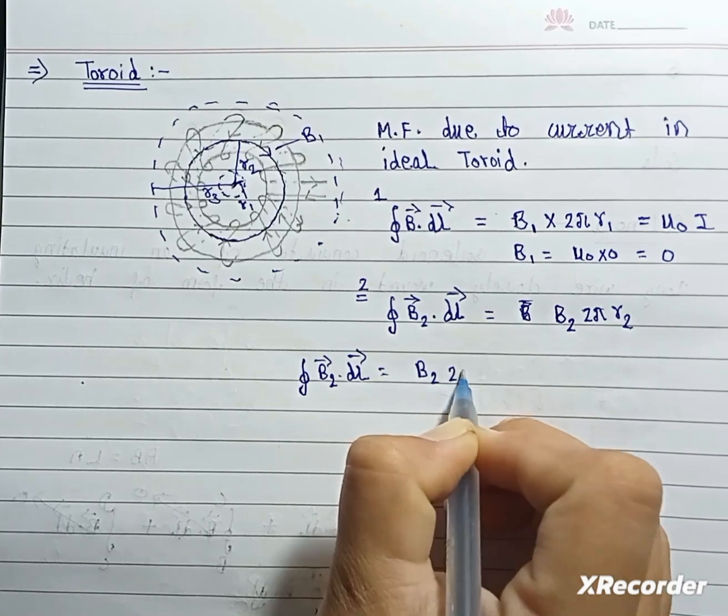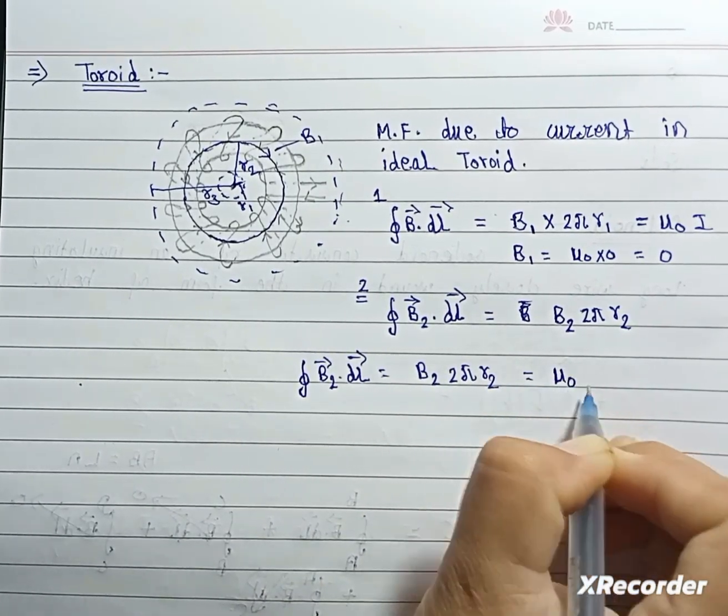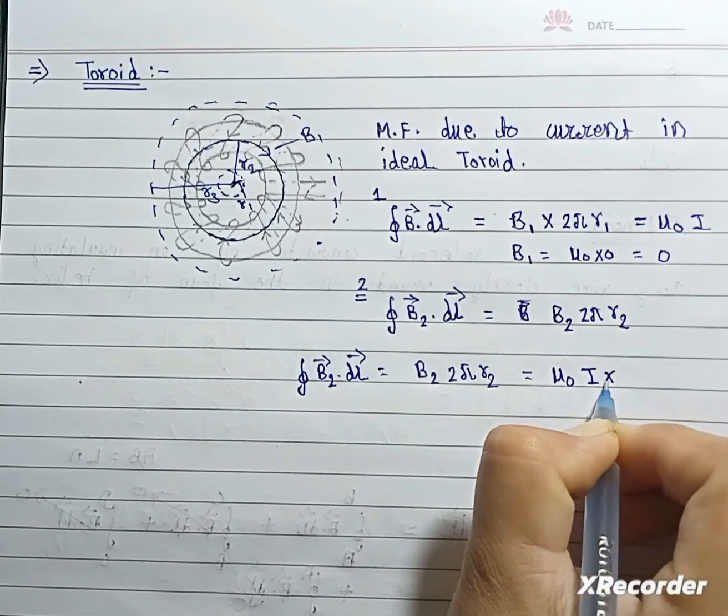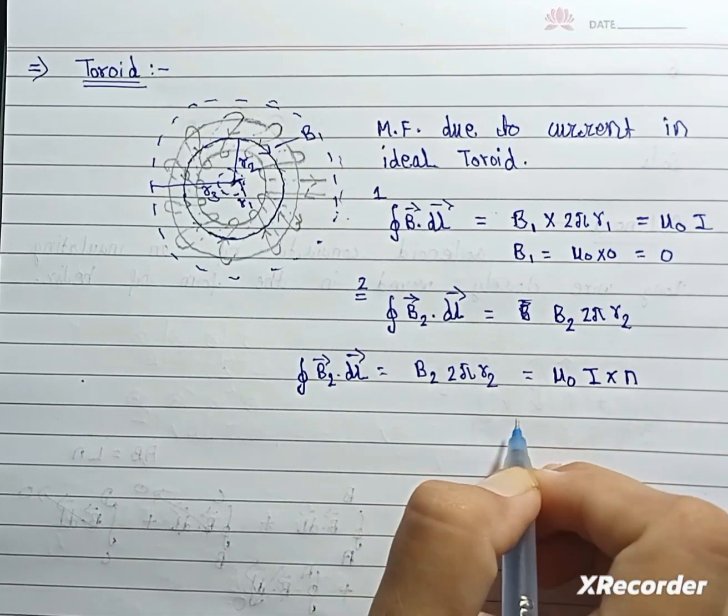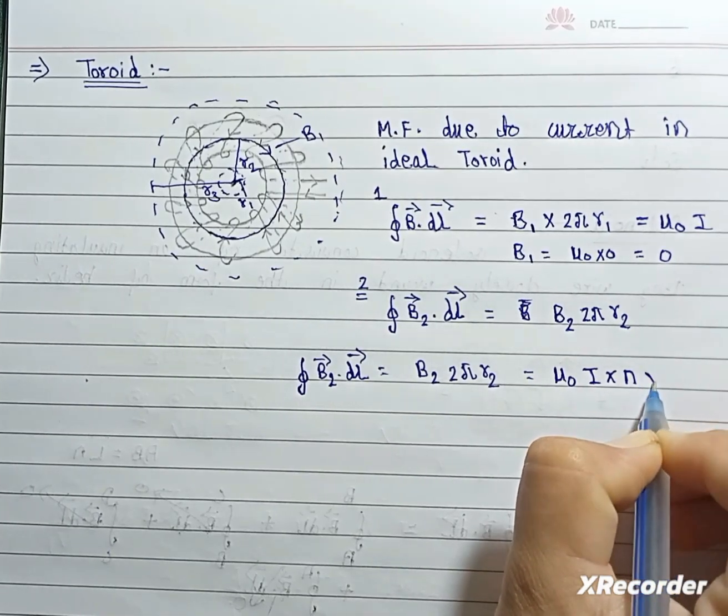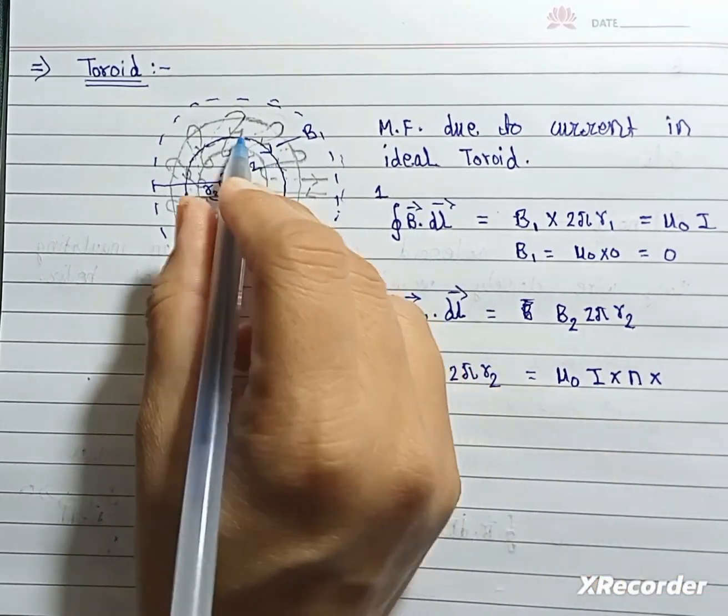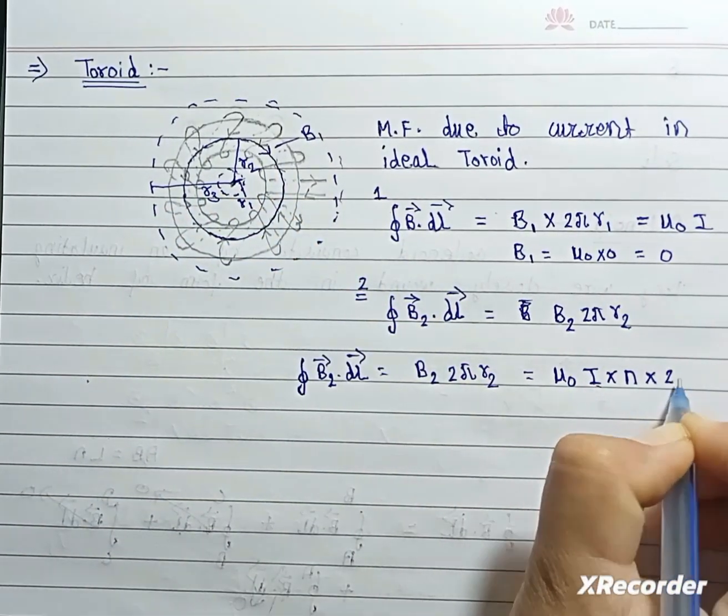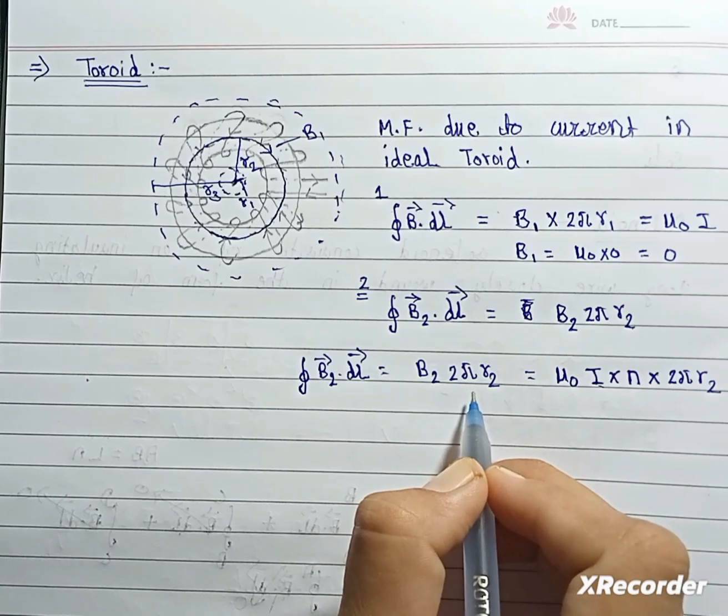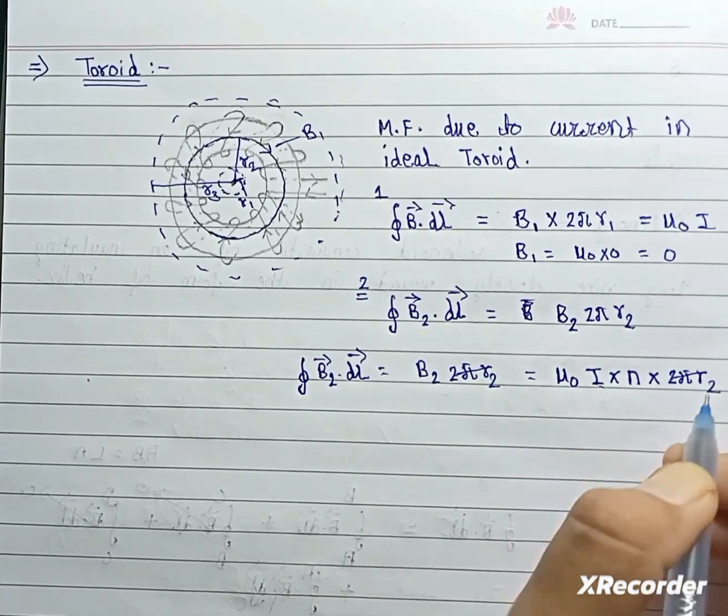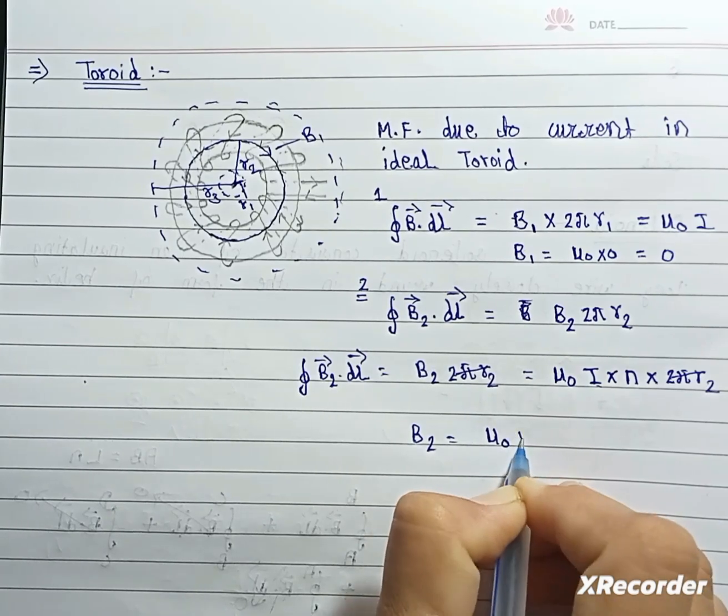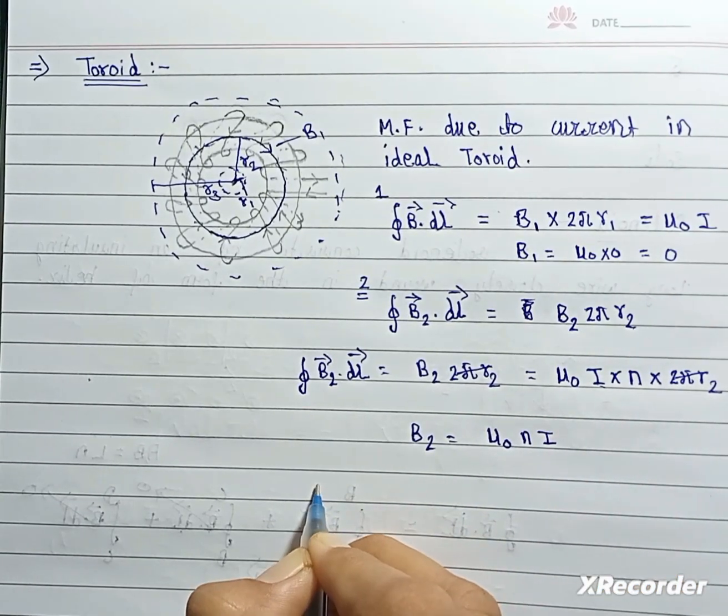This is μ₀ and I for turns into n and radius is into current in closed loop 2. Current in closed loop 2 equals I into 2πr2. From here we get 2πr2 and 2πr2 cancel, and B2 equal to μ₀nI.